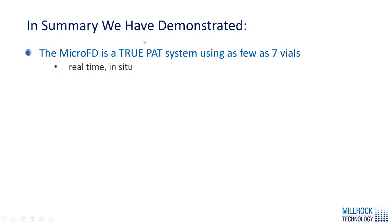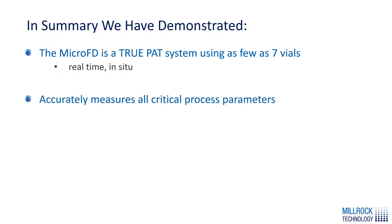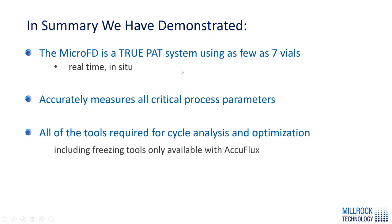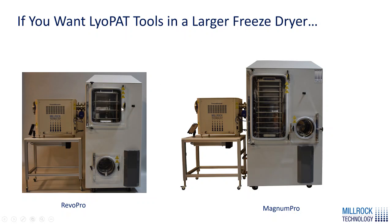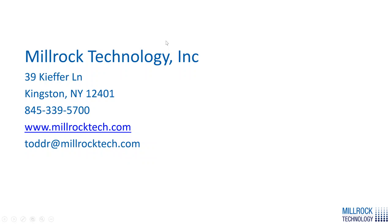In summary, we demonstrated that the micro freeze-dryer is a true PAT system using as few as three vials, though in most cases we use seven vials. It is real-time and in-situ unlike any other process and works in both freezing and primary drying. It accurately measures all the critical process parameters and provides all the tools necessary for analysis, optimization, and transfer. We also offer this technology in six to eight square foot systems and up to 20 square foot systems. An external freeze booster module can be added to any freeze dryer for controlled nucleation. Thank you for your time, and we look forward to working with you on your protocol development needs.